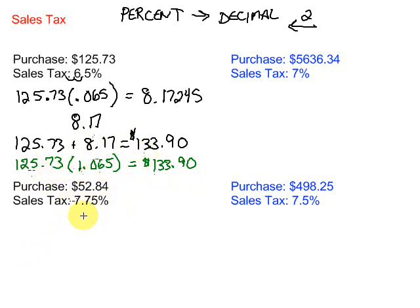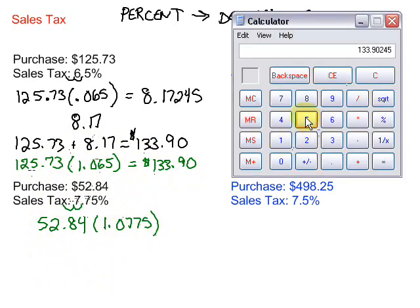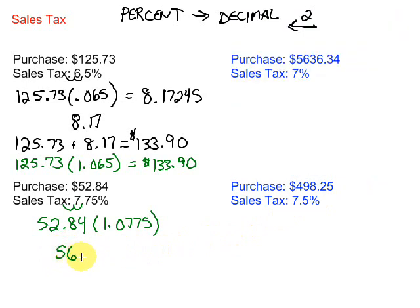I like that method better. So let's take a look at this next one and do that. We have $52.84. We're going to multiply that by the percent plus the 100. So we go 1 point, we've got to change this to a decimal, two spots to the left, 1.0775. We go ahead and multiply that. 52.84 times 1.0775 gives us 56.9351.